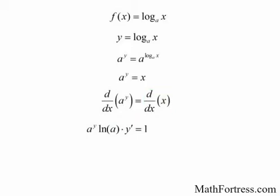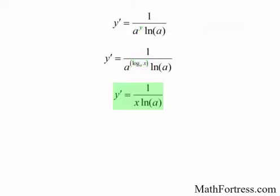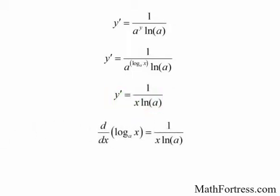Now we solve for y prime. We want an expression in terms of x only, so we substitute the dependent variable y with an expression in terms of x using the original explicit function. Substituting and simplifying, we have that the final derivative is equal to 1 over x times the natural log of a.